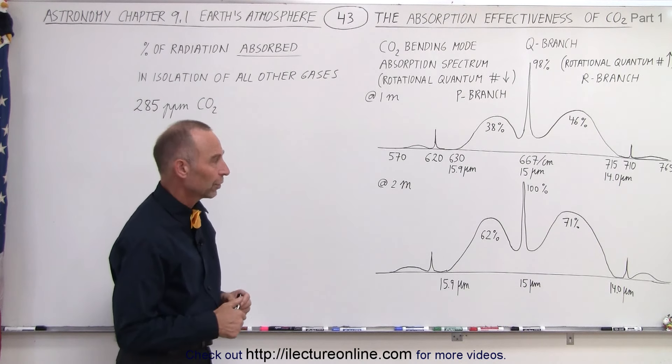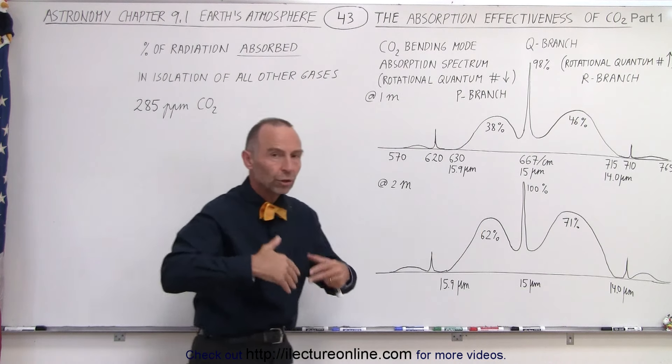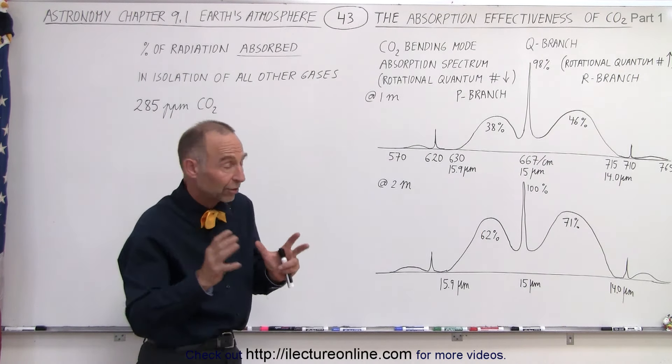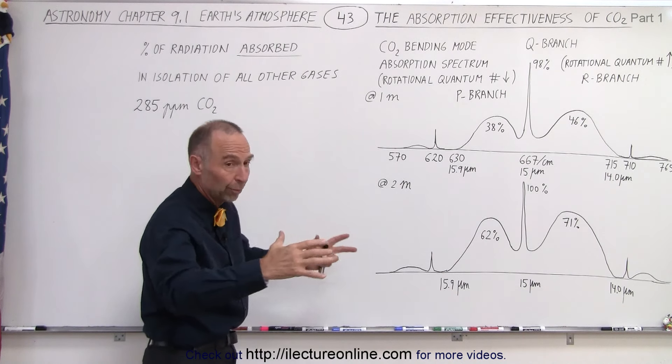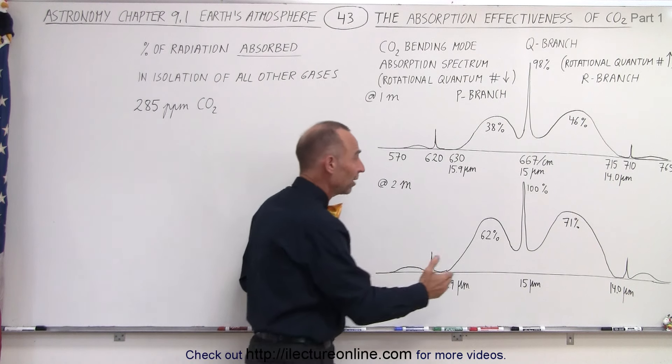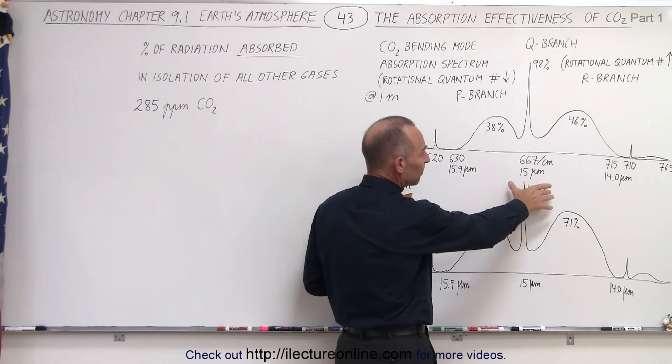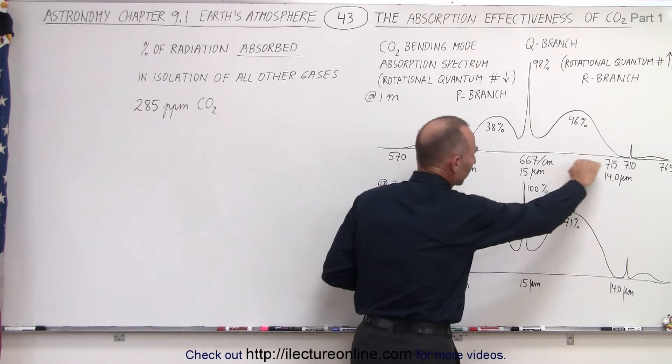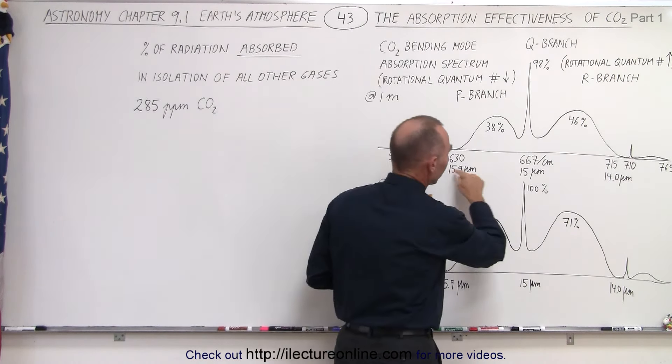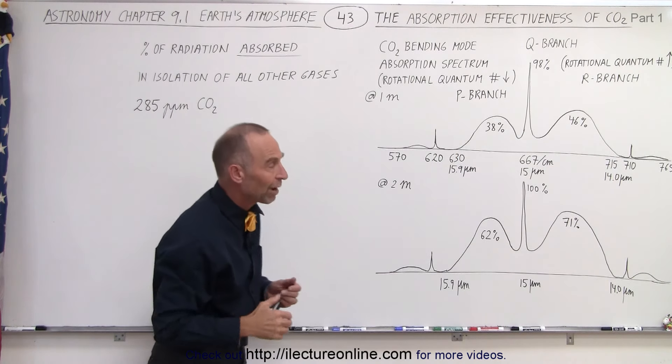Now we're going to concentrate on what we call the bending mode, the quantum bending mode of carbon dioxide, because that's where carbon dioxide is most effective at absorbing most of the energy that it can absorb. And that is centered around the wave number of 667 per centimeter. These numbers represent the wave number, the number of waves per centimeter, or converted into wavelength around the 15 micrometer wavelength center.